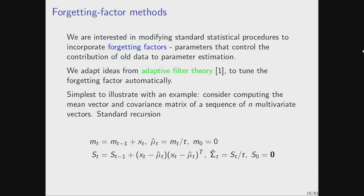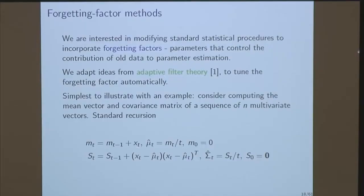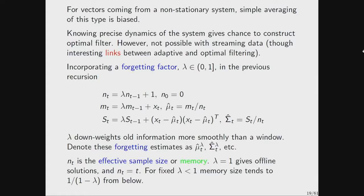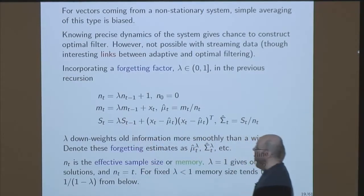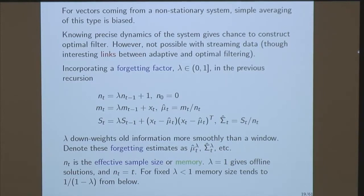These are those same equations reformulated with the forgetting factor. M is the running cumulative sum. Instead of just adding Xt directly, we're down-weighting the old bit — lambda is a parameter between zero and one controlling the amount of weight between the new point and all the old points. It works similarly for the covariance matrix. Why this is elegant: it's a smooth window, and for Gaussian data you're tracking the sufficient statistic.